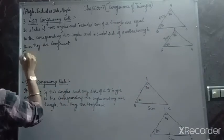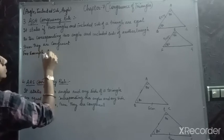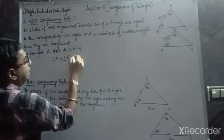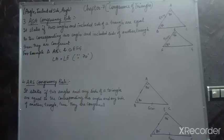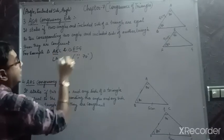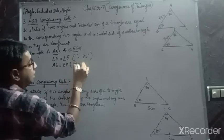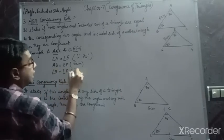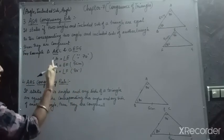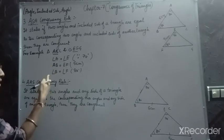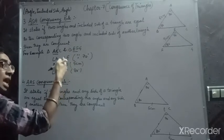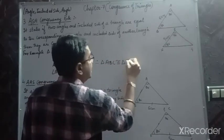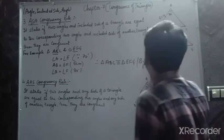In triangle ABC and triangle EFG, angle A is equal to angle E because both are 70°. AB is congruent to EF and they are equal at 5 cm. Angle B is congruent to angle F and both are 80°. Angle, side, angle — the two angles and the included side of one triangle are equal to the corresponding angles and included side of the other. Therefore, triangle ABC is congruent to triangle EFG by ASA rule.